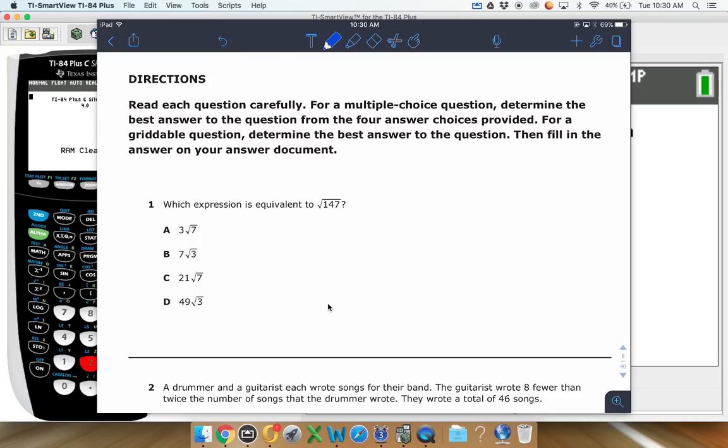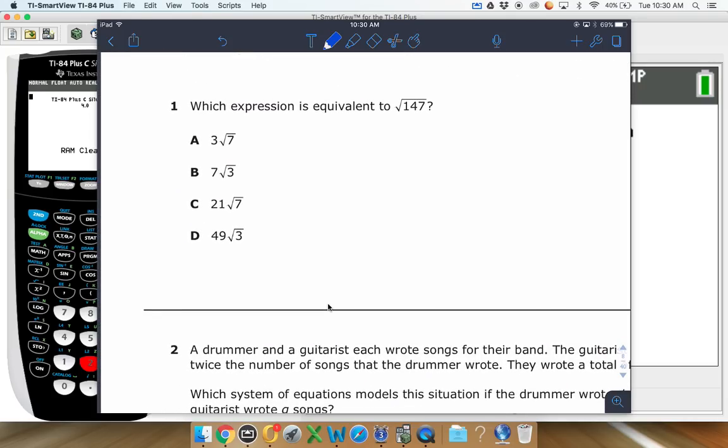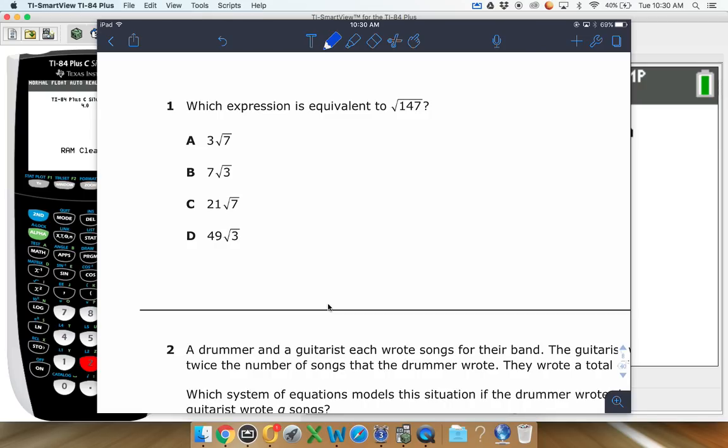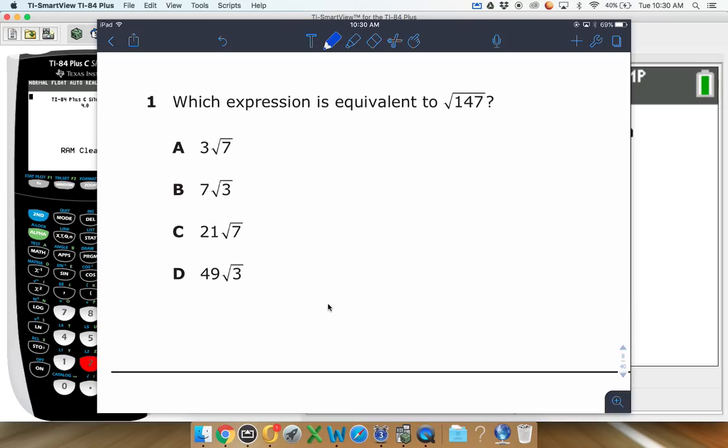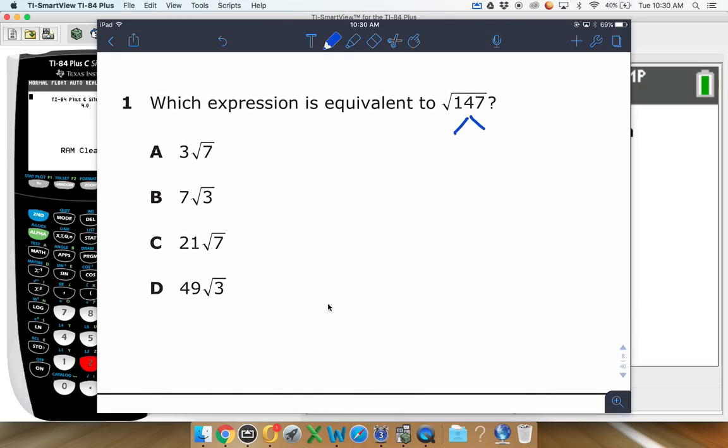First question here: which expression is equivalent to square root of 147? So what we're going to do is simplify this radical down. We need two things that multiply to 147. This is how I teach how to simplify radicals. I believe that'll be divisible by three. Yep, that'll be three and 49. And then the 49 breaks down to 7 and 7.